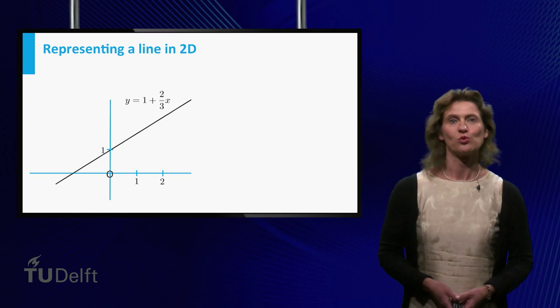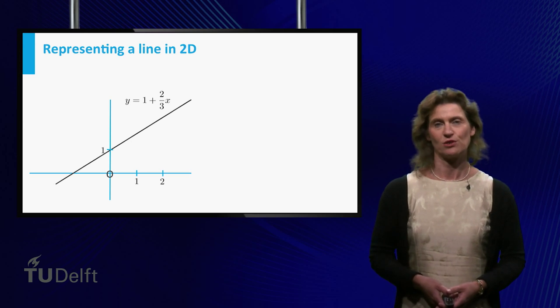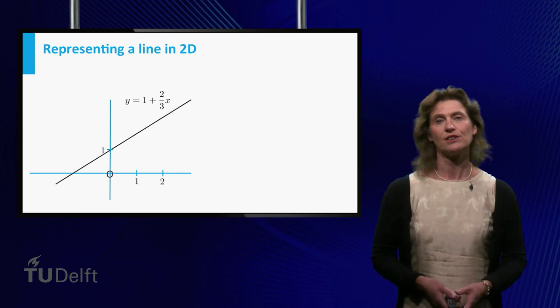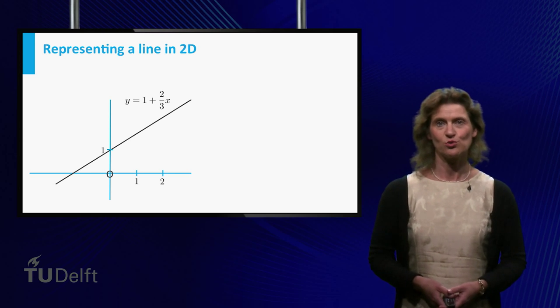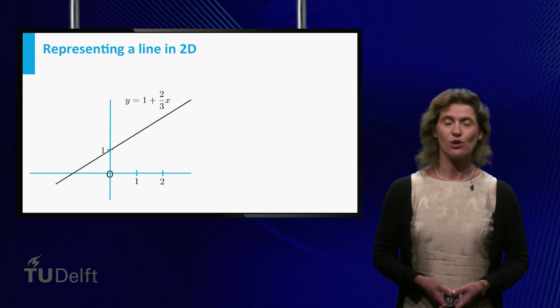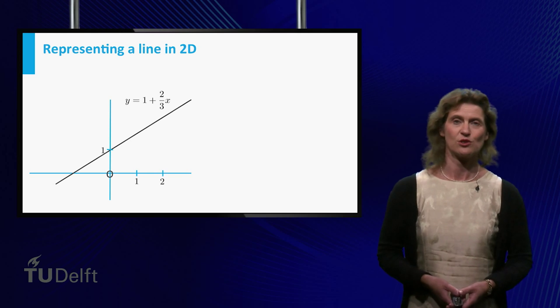At secondary school you learn to represent a line in a two-dimensional plane by its starting point and its slope. Here it is y equals 1 plus 2/3 times x. You see, if x equals 0 you get the starting point and the slope is 2/3.